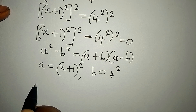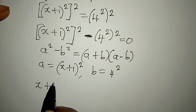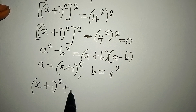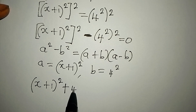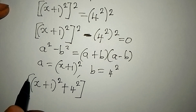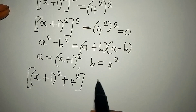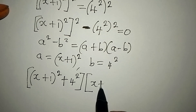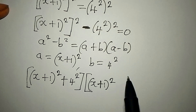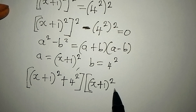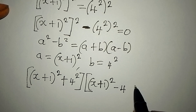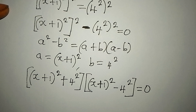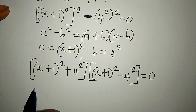So in place of (a+b), I will write (x+1) squared plus 4 squared, and then close this bracket. Then (x+1) squared minus 4 squared, and close this bracket, equated to zero.